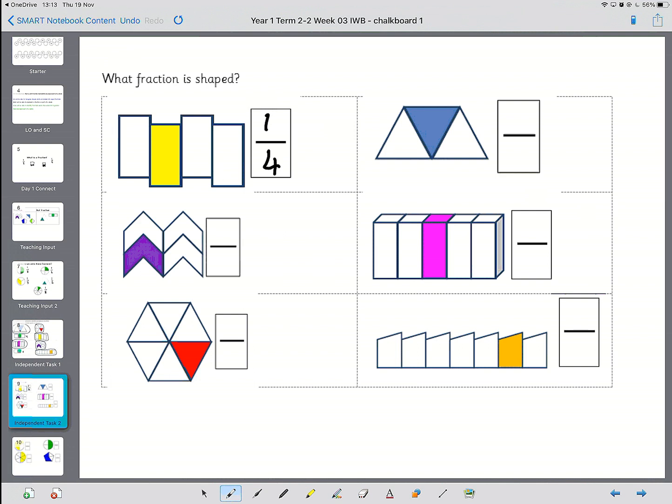So have a go at these other ones, and then we can go through them in just a moment. So welcome back. This one is one part colored out of four parts. This one is one part colored out of six parts. This one is one part colored out of three parts. This is one part colored out of five. And this is one part colored out of seven. I bet you got those all right.